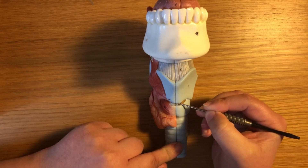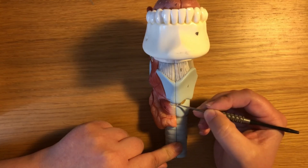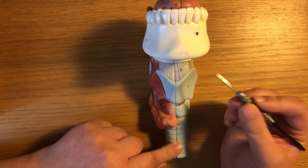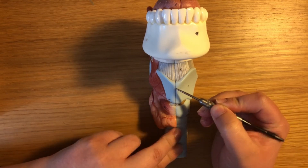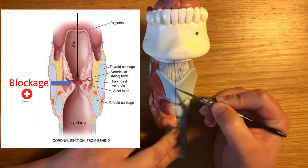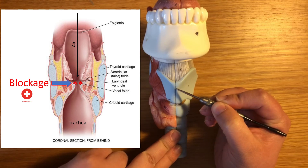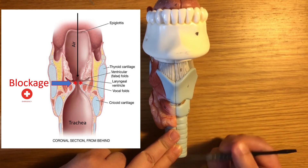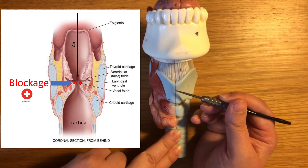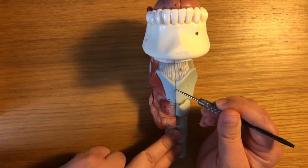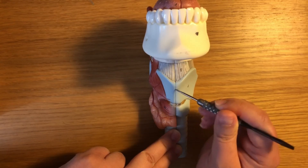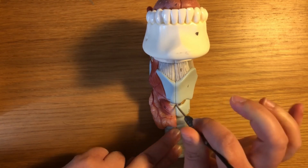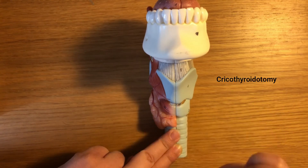The cricothyroid membrane is an important palpable structure of the larynx because, unfortunately, in very rare instances, it may be a point of entry into the airway should the vocal cords — which sit at approximately this level, deep to the thyroid cartilage — become swollen or obstructed, for example by a foreign body. If the patient can't breathe air through the larynx into the trachea, and we similarly can't get a tube in through the mouth or pharynx down into the larynx because we can't get the tube past the blockage, then we may need to form an access point beneath the vocal cords. That procedure is called a cricothyroidotomy.